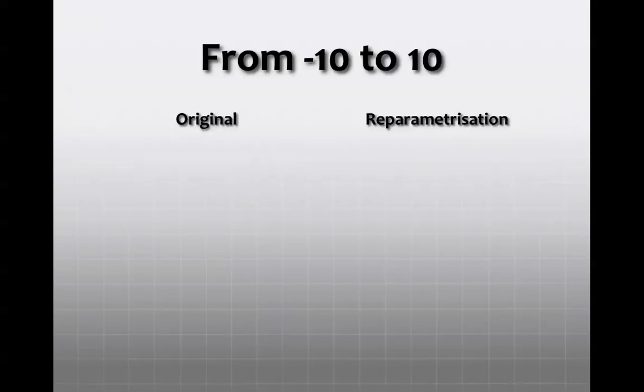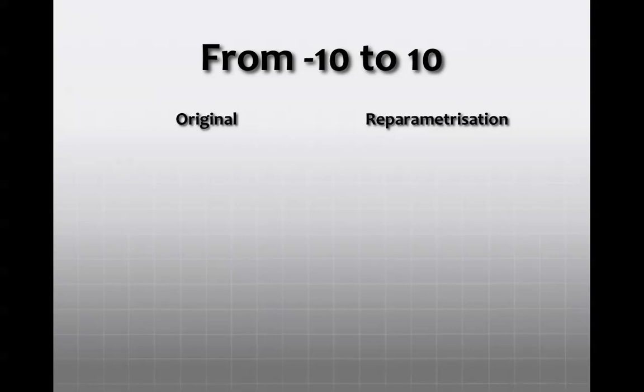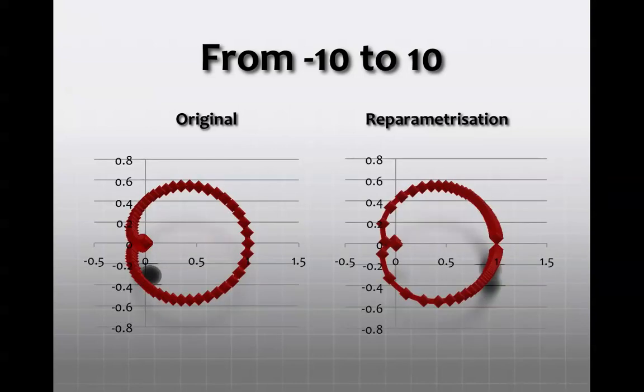And then we can plot all of those points, which is the reparametrisation, and we can compare it to our original graph. And as we can see, it's the same shape. So we have managed to reparameterise it. Apart from this time, it does have unit speed.